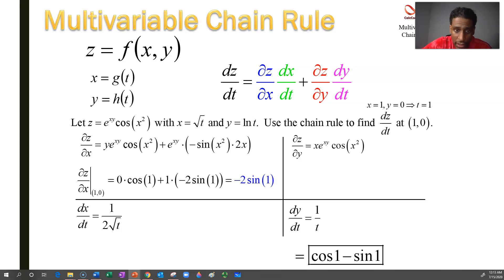Next, we plug in the 0 for y and the 1 for x into the y partial derivative. And what we get out is 1 times the cosine of 1. Now, t is equal to 1, so 1 over 2 root t is 1 over 2. t is equal to 1, so 1 over t is 1.